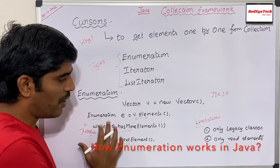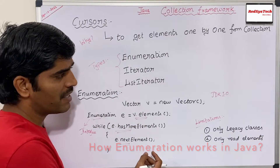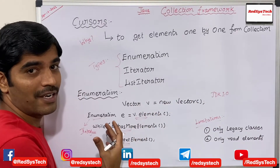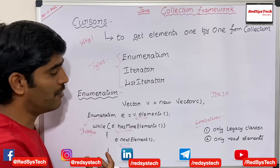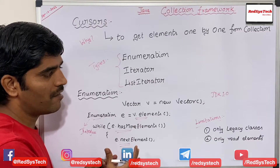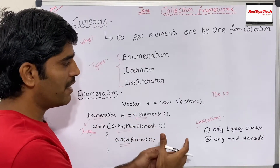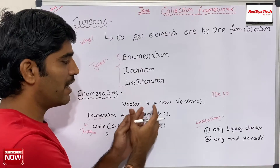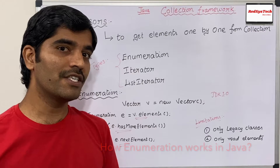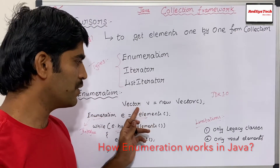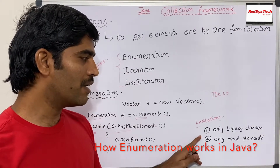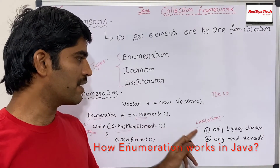Enumeration was introduced in Java 1.0 — it was the first mechanism introduced to iterate elements inside the collection framework. However, it is not very efficient and we don't use it much nowadays because it has some limitations. The main limitation is that it is only applicable for legacy classes. Legacy classes are the old initial classes introduced in Java, for example Vector. Nowadays nobody uses Vector classes in real-time programming. That is one of the main limitations — it is applicable only for legacy classes.